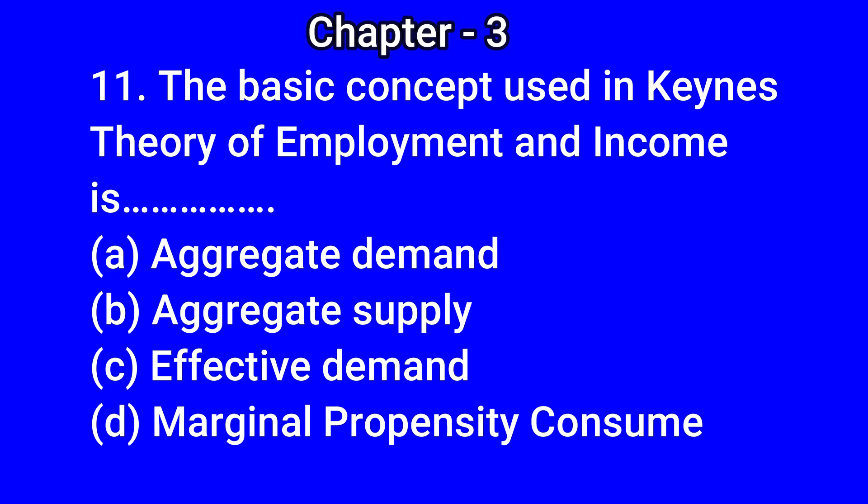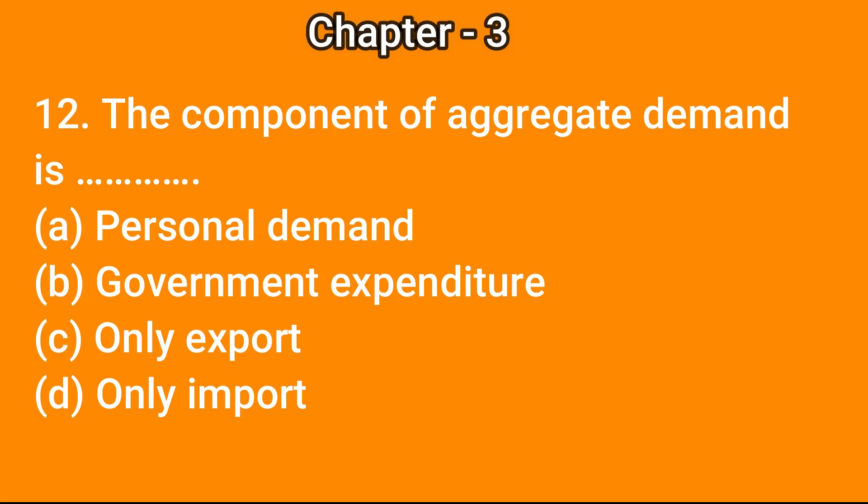...effective demand. Question number 12: the component of aggregate demand is — (a) personal demand, (b) government expenditure, (c) only export, (d) only import. The correct answer is (b) government expenditure. Question number 13: aggregate demand is equal to...